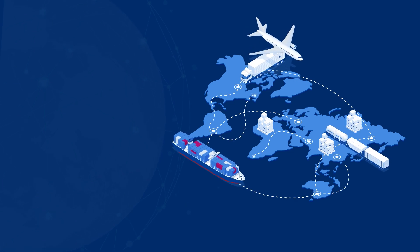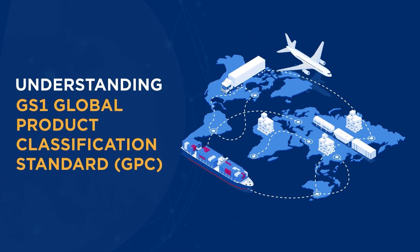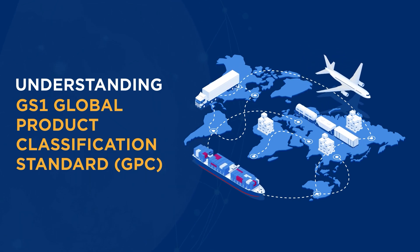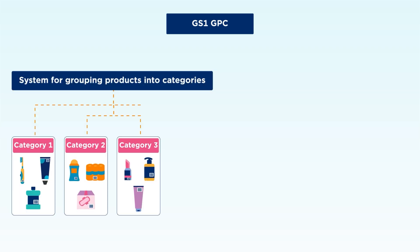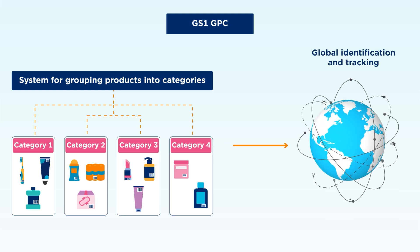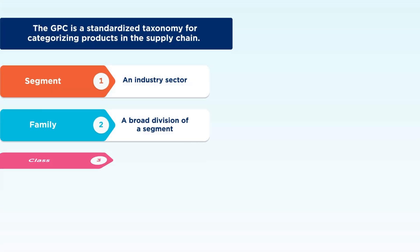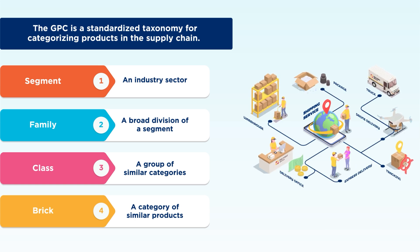Welcome! In this module, we will explore the GS1 Global Product Classification Standard and its significance in global trade. The GS1 Global Product Classification, or GPC system, helps group products into standardized categories for easier global identification and tracking. The GPC is a standardized taxonomy for categorizing products in the supply chain.